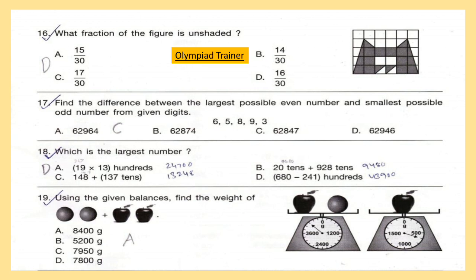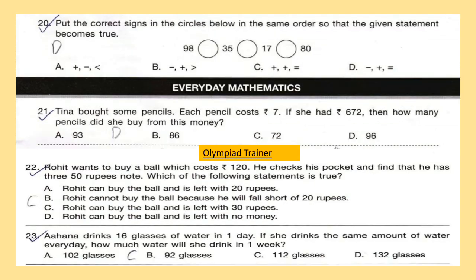Question 19: Using the given balances, find the weight of two oranges plus two apples. Question 20: Put the correct signs in the circles below in the same order so that the given statement becomes true.